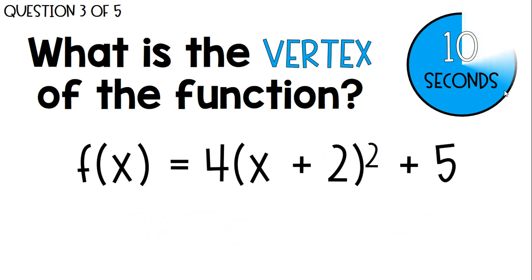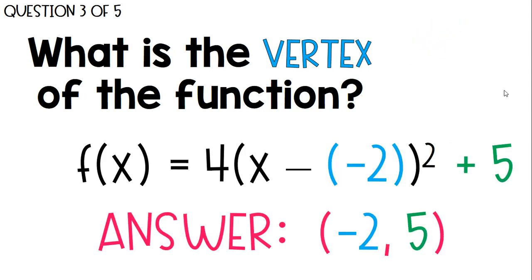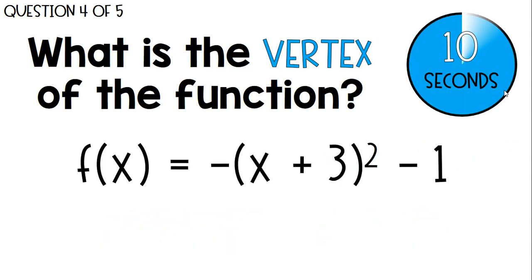What's the vertex of this function? Negative 2, 5. Now remember, whenever you have x plus a value, it's really the opposite sign. So the h value of our vertex is negative 2, while the k value is still that 5.